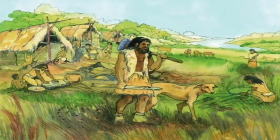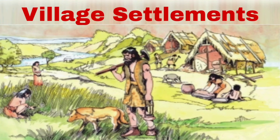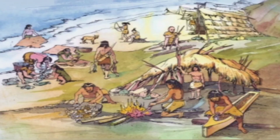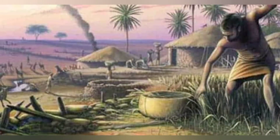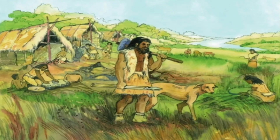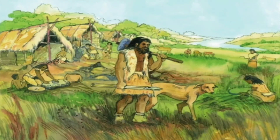Now let's turn to the last topic: village settlements. The way of life in the New Stone Age was completely different from the Old Stone Age and Middle Stone Age. During this period, humans started doing agriculture and started producing food grains. The beginning of cultivation is a characteristic of the culture of the New Stone Age.